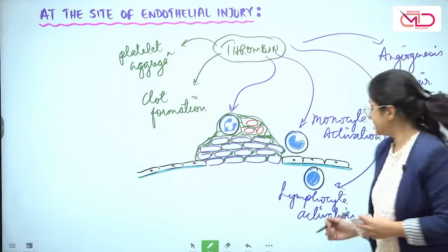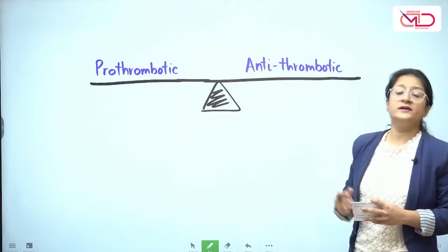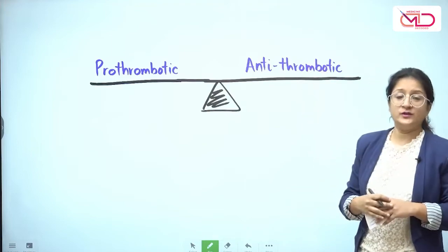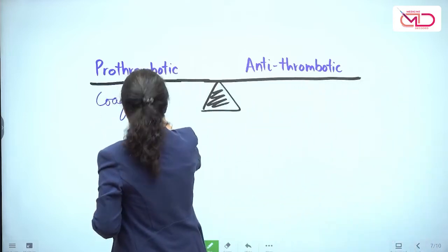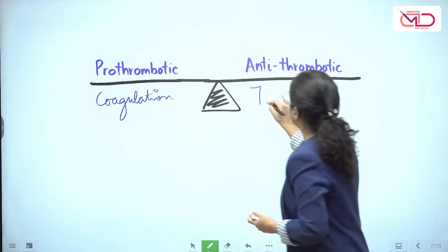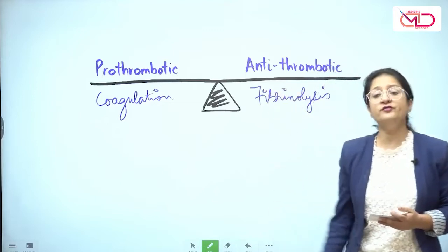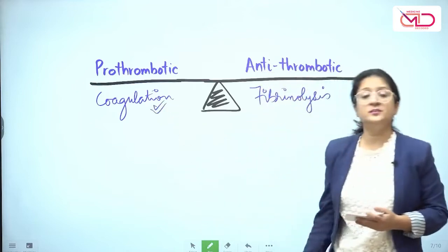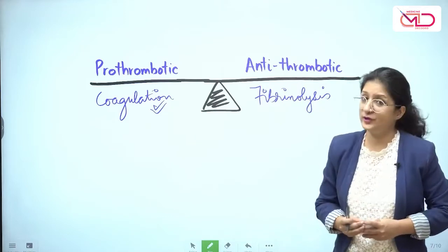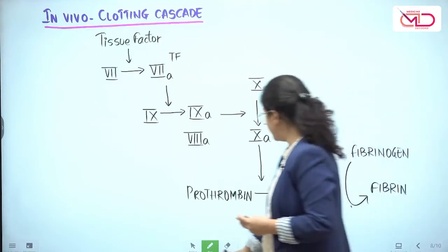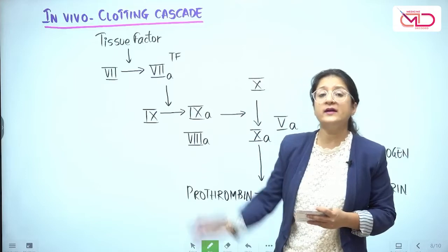The pro-thrombotic factors and the anti-thrombotic factors released from the endothelium are in balance. Similarly, there are two distinct pathways — the coagulation pathway and the fibrinolysis pathway — which maintain a balance with each other. Let's now focus more on the coagulation pathway to understand the second aspect of thrombosis, which is hypercoagulability. So let's see how coagulation happens in vivo.